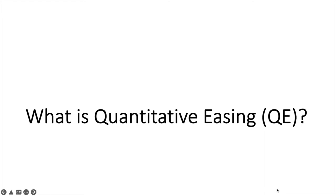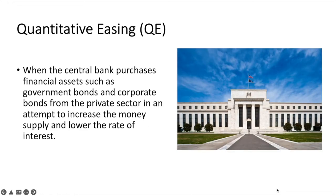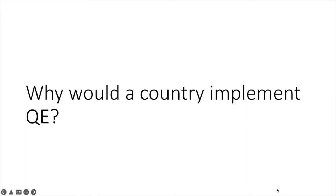First, let's discuss what quantitative easing, or QE, is exactly. Quantitative easing occurs when the central bank purchases financial assets such as government bonds and corporate bonds from the private sector in an attempt to increase the money supply and lower the rate of interest. That's the basic definition, but let's dig a little deeper. The question we need to answer is why a central bank would pursue this and also try to understand specifically how QE works.